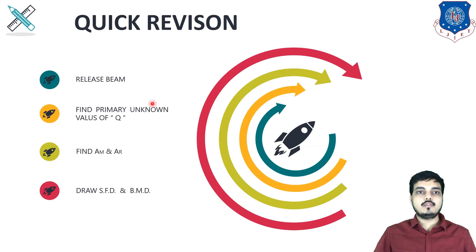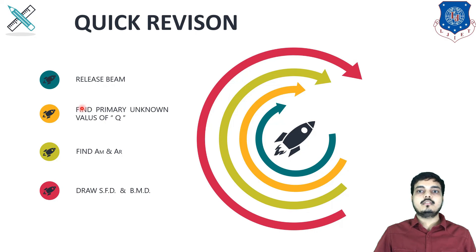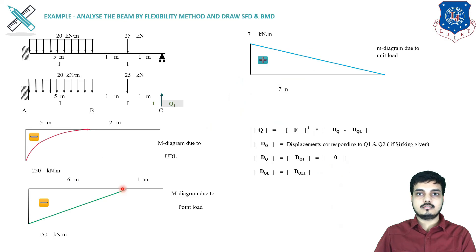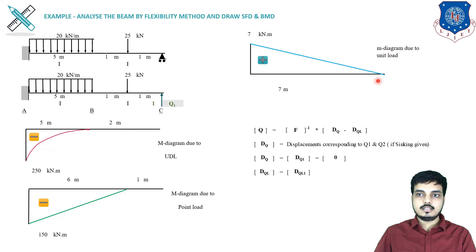Let's have a quick revision of what we did: first we released the beam, then we found the primary unknown (the redundant), then we found AM and AR, and finally we drew the shear force and bending moment diagrams. The capital M diagram was due to external loading and the small m diagram was due to the redundant, and using the flexibility method formula we solved the entire example.